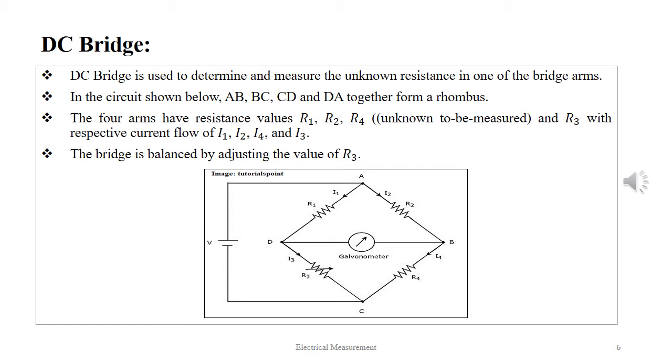The four arms have resistance values of R1, R2, R4 (the unknown resistance), and R3 (the variable resistance) with respective currents of I1, I2, I4, and I3. The bridge is balanced by adjusting the value of R3, and thus we can determine the value of R4 when the balance condition is attained.